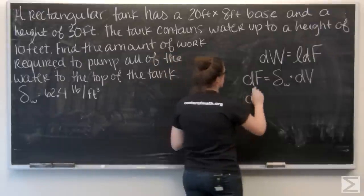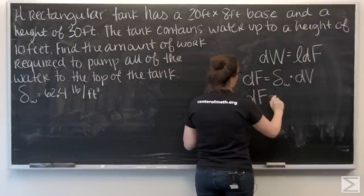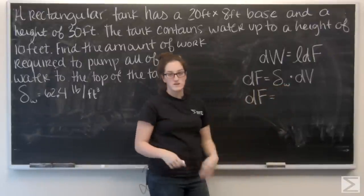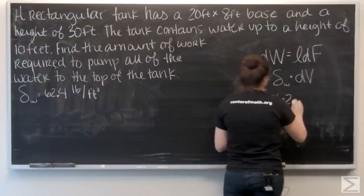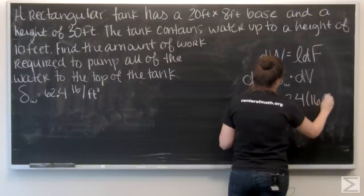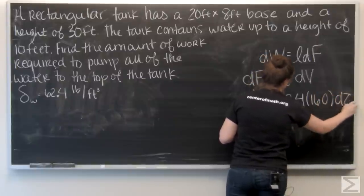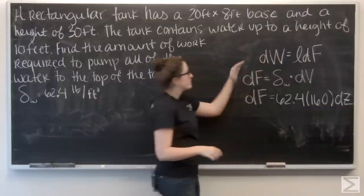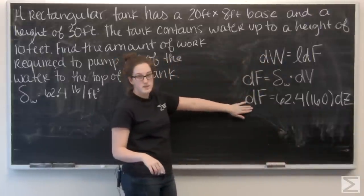So, I can think about dv as 160 dz. Okay. And I know this weight density to be 62.4.